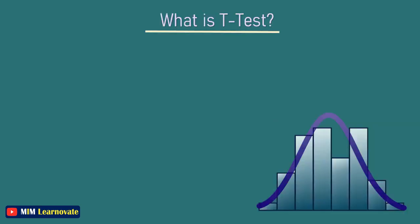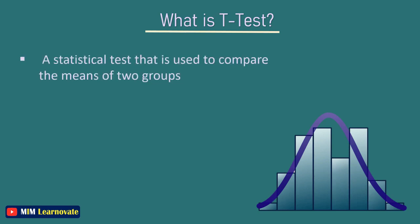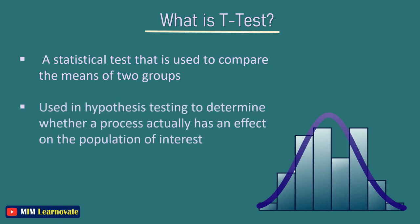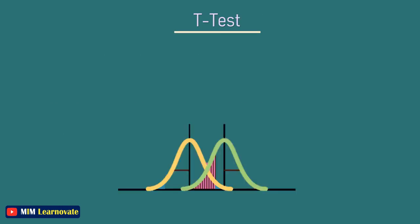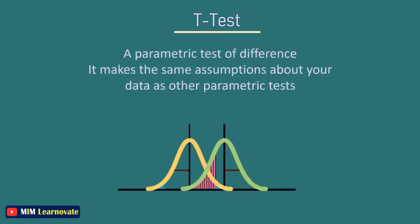What is a T-test? A T-test is a statistical test that is used to compare the means of two groups. It is often used in hypothesis testing to determine whether a process or treatment actually has an effect on the population of interest or whether two groups are different from one another. The T-test is a parametric test of difference, meaning that it makes the same assumptions about your data as other parametric tests.